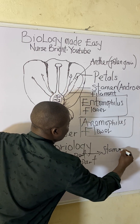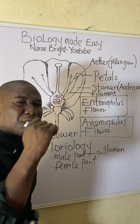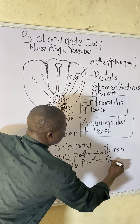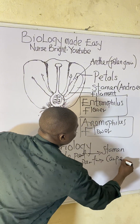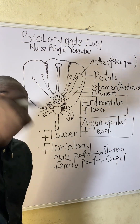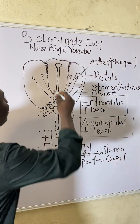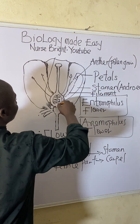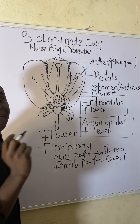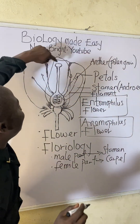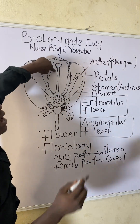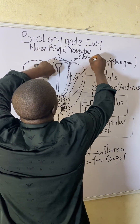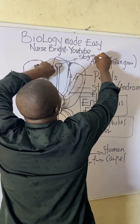The female part of a flower is simply called the carpel. The carpel has different parts. The top of the carpel is simply called the stigma.